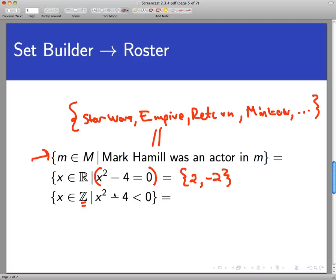If I didn't have the integers here, this would be a very large set, but since I only want to think of x's that belong to the integers, there aren't too many of these that happen. Negative 1 would be one of those because negative 1 squared minus 4 is less than 0, 0 would be another, and 1 would be a third one, and that's it. So we've converted from this set builder notation to that roster notation.